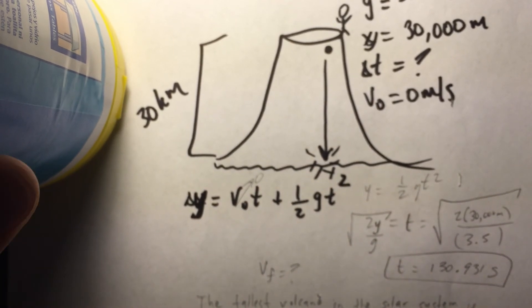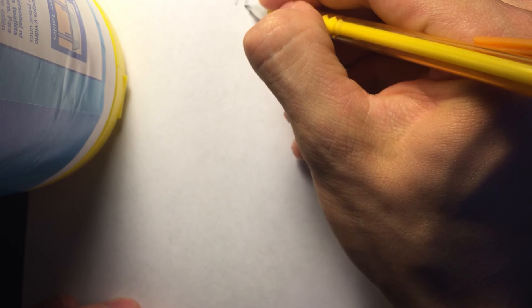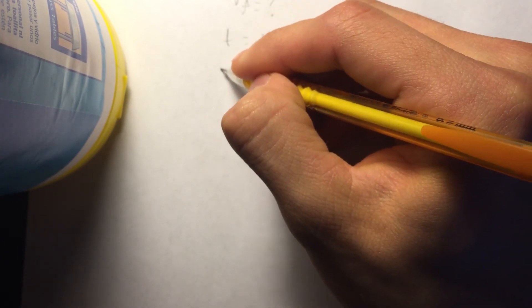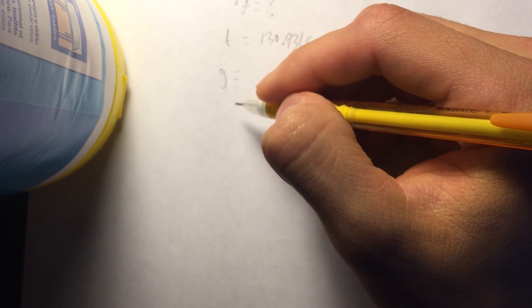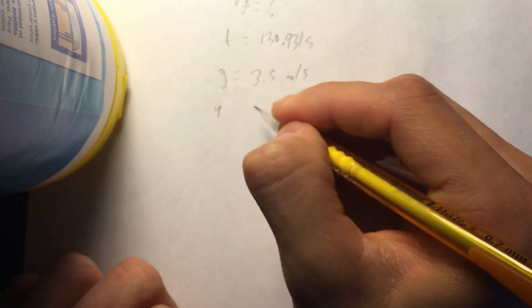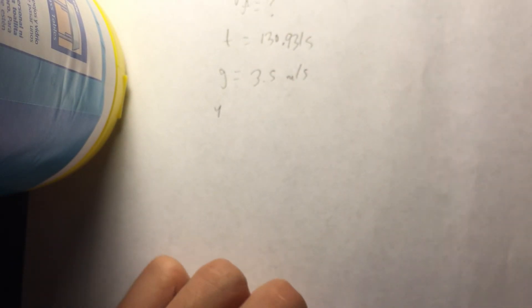So, what is v-final? Let me flip this paper. So, we want v-final, right? So, now we have our given time of 130.931 seconds. We have our g of 3.5 meters per second. And we have our y, etc. And so, we look,